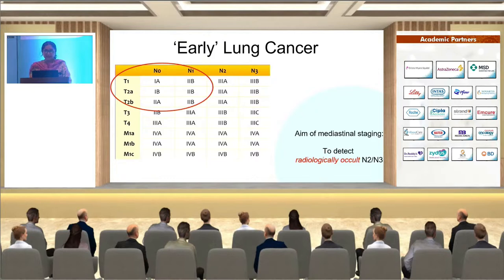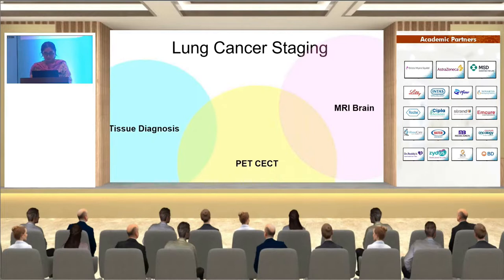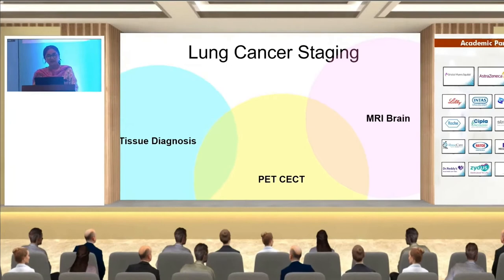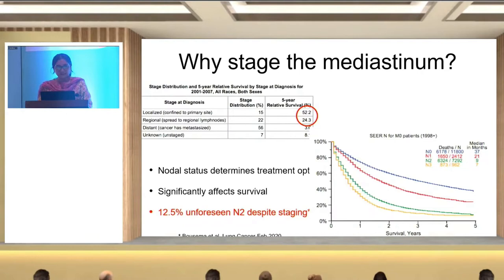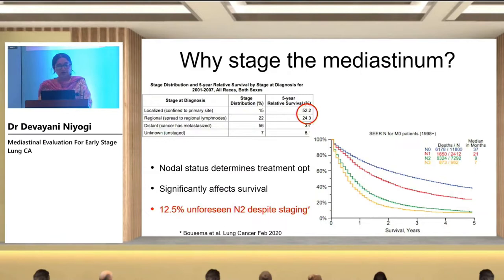If you've already decided that there is early lung cancer on imaging, why do we need to stage the mediastinum? It is basically to detect the radiologically occult N2 and N3 nodes. Lung cancer staging mainly involves tissue diagnosis, a PET scan for whole body staging, and an MRI brain to look for brain metastasis. After all of this, why stage the mediastinum? Only 15 to 20% of lung cancers present in early or loco-regional stage, and the survival drops precipitously — almost by half — once lymph nodes become involved. The nodal status determines treatment options and prognosis.